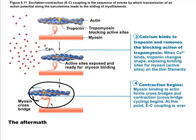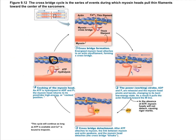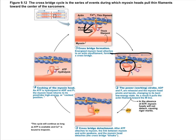Here's the cross-bridge cycle. Assuming calcium is present and bound to troponin, actin is available for myosin to bind. Myosin binds, forming a connection called a crossbridge — the connection between myosin and actin. Myosin then snaps back, changing shape, and actin is pulled in that direction. That pulling is what actually generates force.